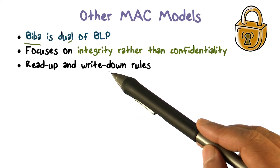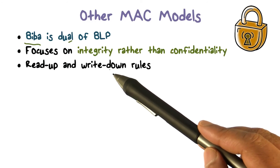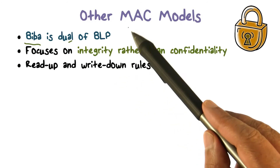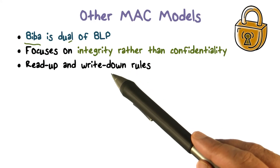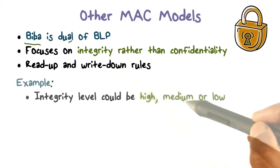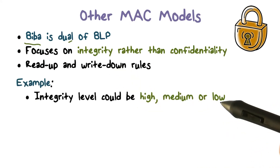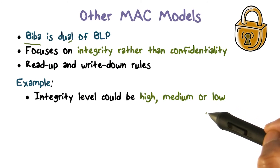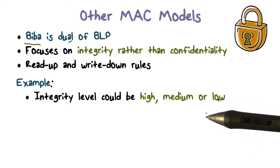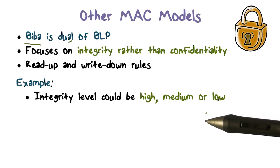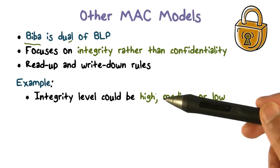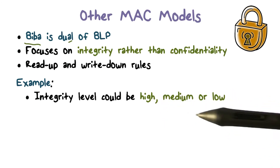We're not concerned about confidentiality or disclosure here — we're concerned about information integrity. Let's look at an example to clarify this a bit. Integrity could be high integrity, medium integrity, or low integrity. In terms of information quality, think of your favorite newspaper that you trust a lot.